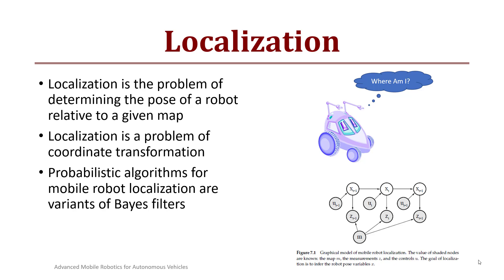Localization is a problem of coordinate transformation: how do you transform the robot's local or relative frame into a global frame if you know the robot's map? Probabilistic algorithms for mobile robot localization are basically variants of Bayes filters. In this nodal graphical model, a robot at a known position x_{t-1} receives a motion control, updates with sensor data with respect to the map, and iterates through the sensor and motion models. The map, measurements, and controls are known, allowing inference of positions x_{t-1}, x_t, and x_{t+1}.